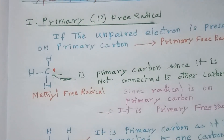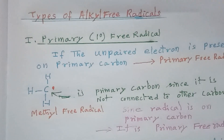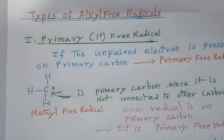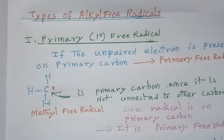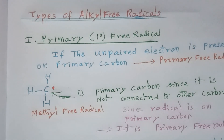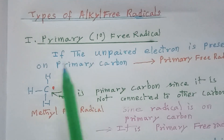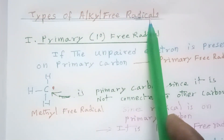Many times we get the doubt: what is a free radical, what is a group? They are one and the same. For the sake of reactions, sometimes we call them free radicals and sometimes we call them groups. So alkyl group and alkyl free radical — methyl group and methyl free radical, ethyl group and ethyl free radical — are the same. Don't get confused. Now let us see the types of alkyl free radicals.